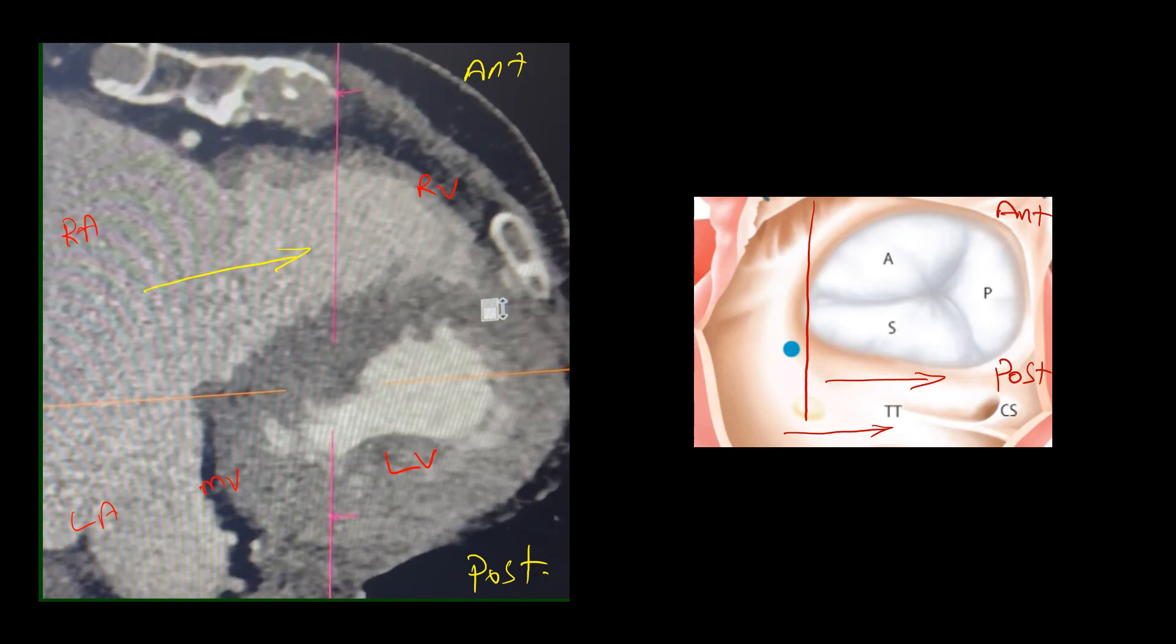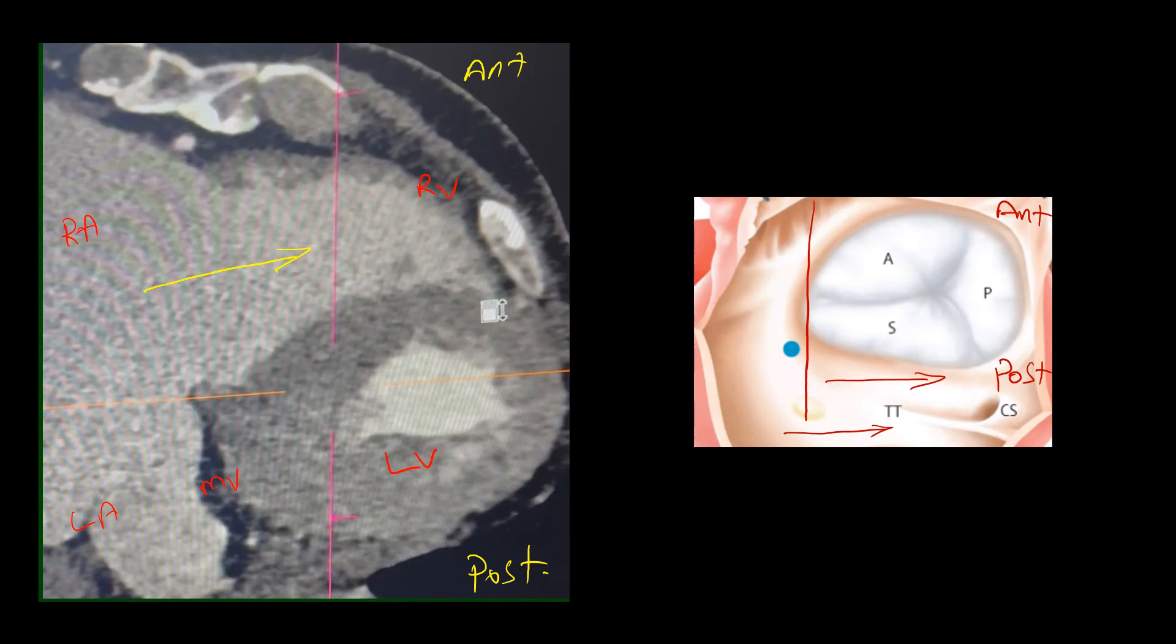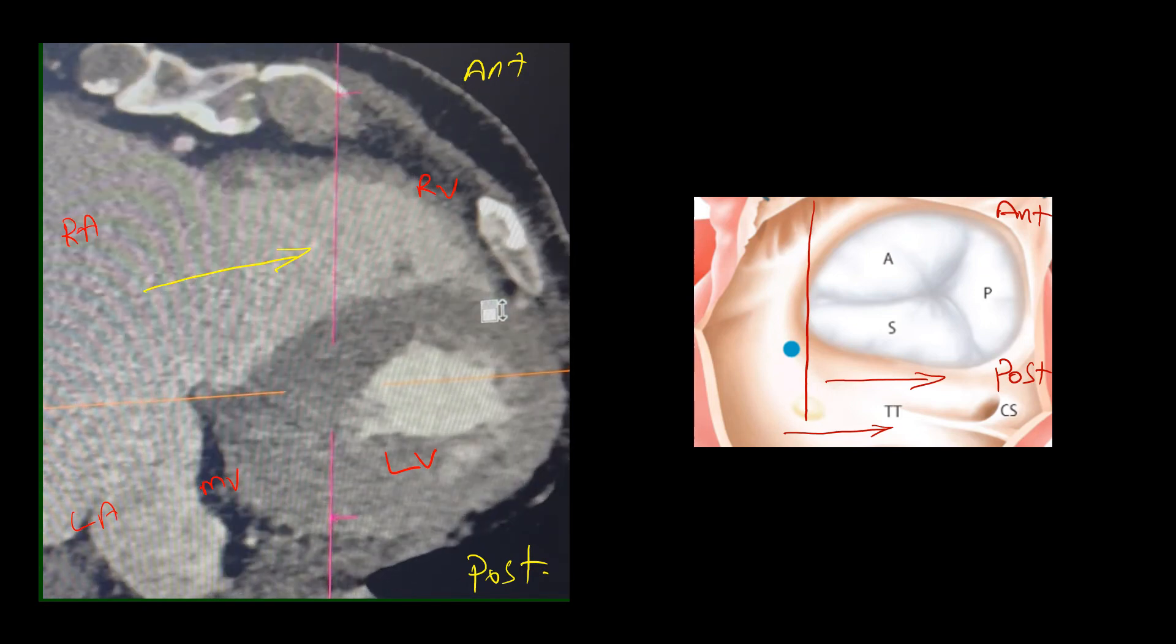The other important note in this view is a significantly dilated tricuspid annulus, which here measures about 55 mm, which is severely dilated.